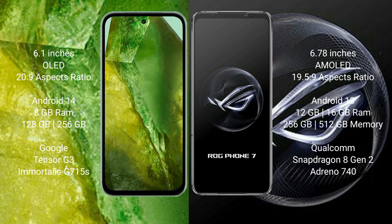Google Pixel 8a runs on the Android 14 operating system. Asus ROG Phone 7 runs on the Android 13 operating system. Google Pixel 8a comes with 8GB RAM and 128GB or 256GB internal storage, with a Google Tensor G3 processor.